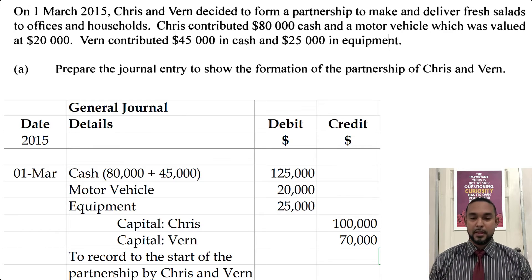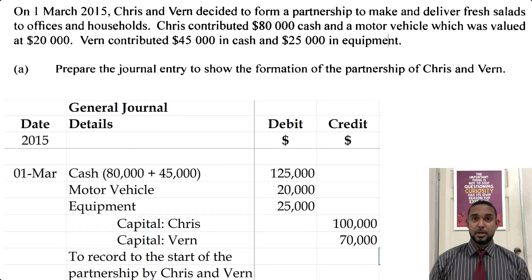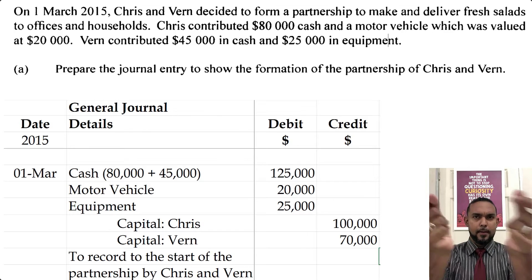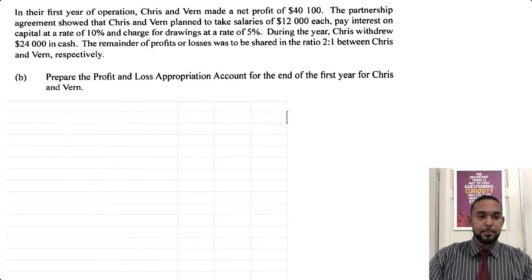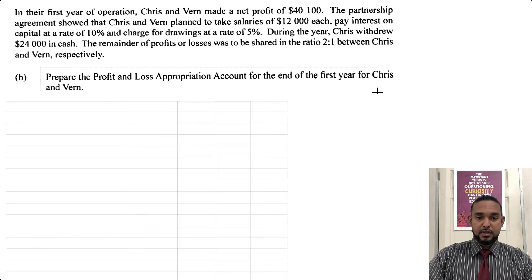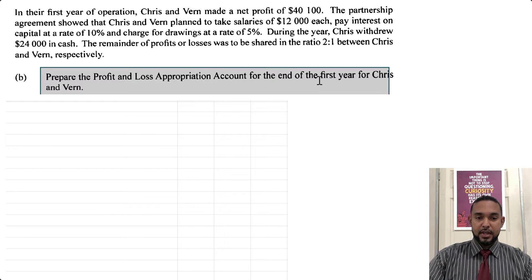The next thing they want is an appropriation account. Let me rearrange my screen. This is Part B, where they want us to prepare the profit and loss appropriation account for the end of the first year for Chris and Verne.